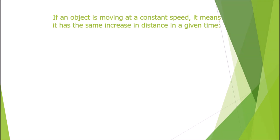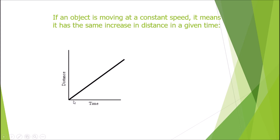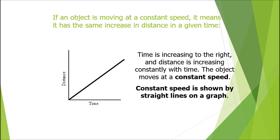If an object is moving at a constant speed, it has the same increase in distance in a given time. As time increases, distance also increases in the same proportion. Constant speed means distance and time vary in the same proportion, so time increases to the right and distance increases constantly. A straight line passing through the origin shows constant speed.